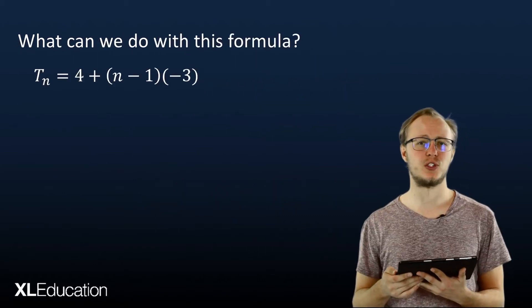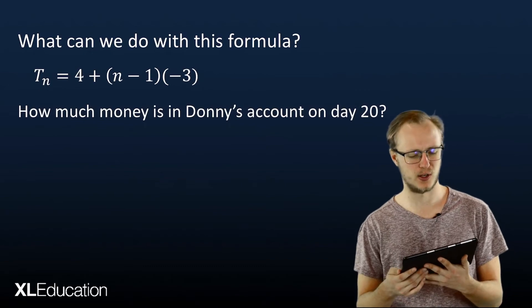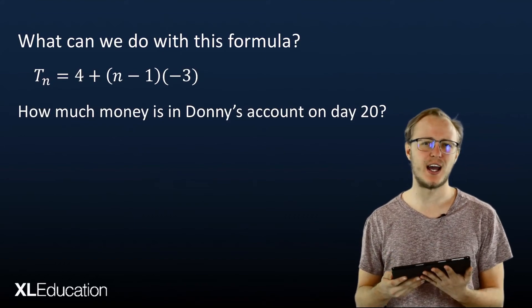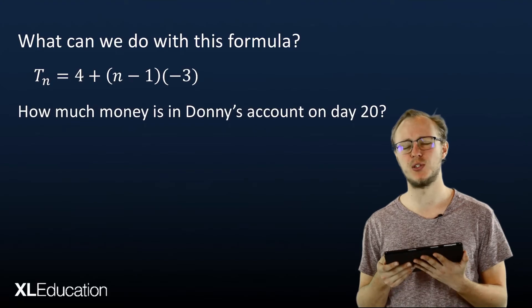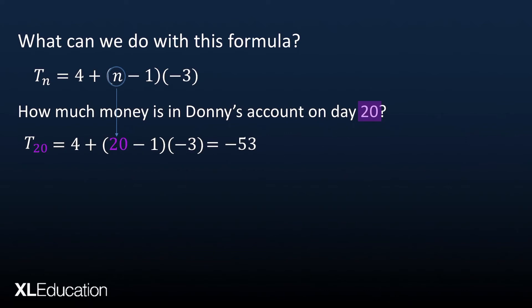So what can we do with this formula? We can answer questions. For example: how much money is in Donnie's account on day 20? We want the term at position 20, so we substitute n equals 20 into our formula. When we compute it we get minus 53. So after 20 days of his addiction, Donnie is going to overbank 53 rand.